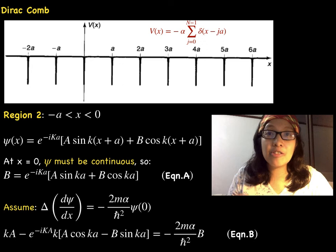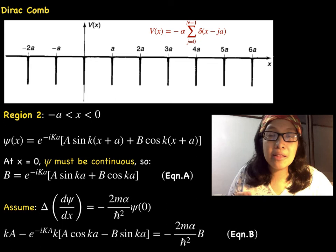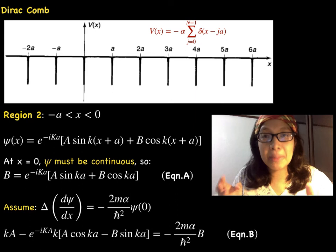For the second region x < 0 but greater than negative a, we apply Bloch's theorem. So the wave function is written this way and the Bloch factor is expressed in terms of the capitalized letter K.